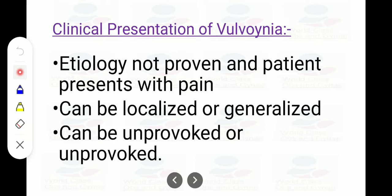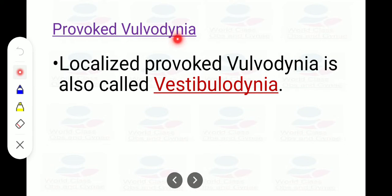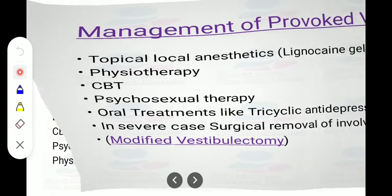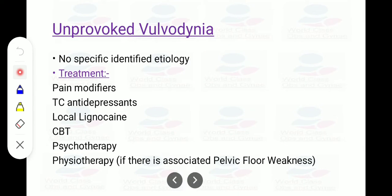Vulvodynia is a condition where the aetiology is not proven and patient presents with pain. It can be localized or generalized, provoked or unprovoked. Provoked vulvodynia localized to the vestibule is called vestibular vulvodynia. Treatment for provoked vulvodynia includes local anaesthetic (lignocaine gel), physiotherapy, cognitive behaviour therapy, sexual therapy, and oral tricyclic antidepressants like amitriptyline. In severe cases, modified vestibulectomy is considered. Unprovoked vulvodynia treatment includes pain modifiers, tricyclic antidepressants, lignocaine, CBT, psychotherapy, and physiotherapy.